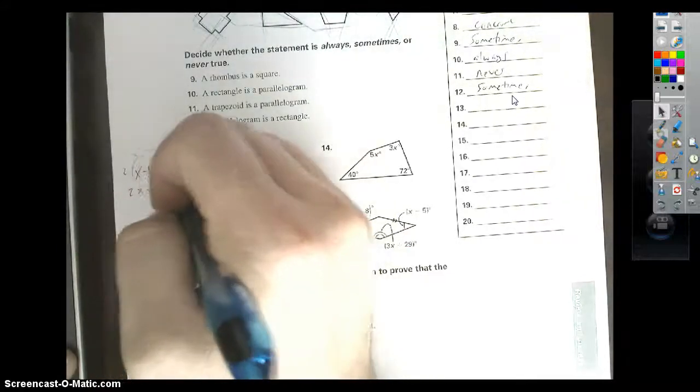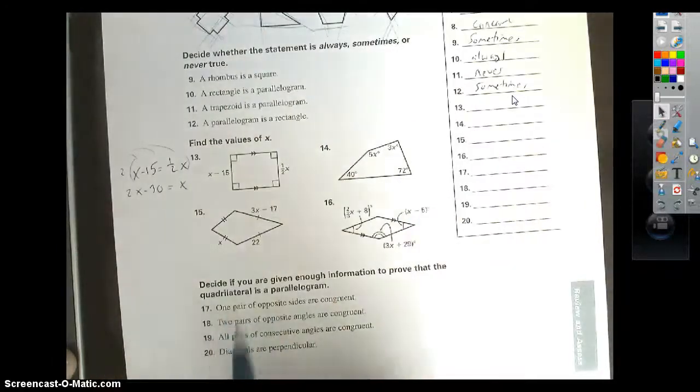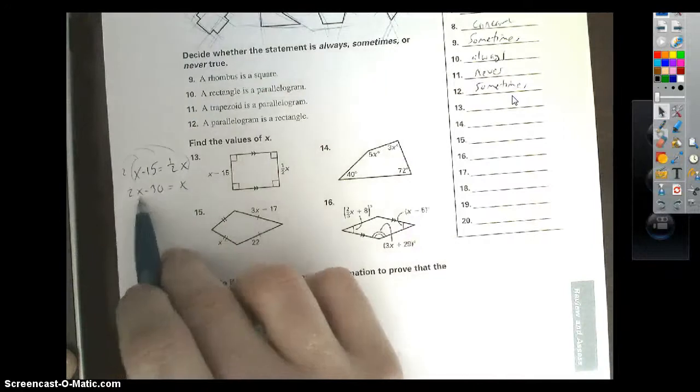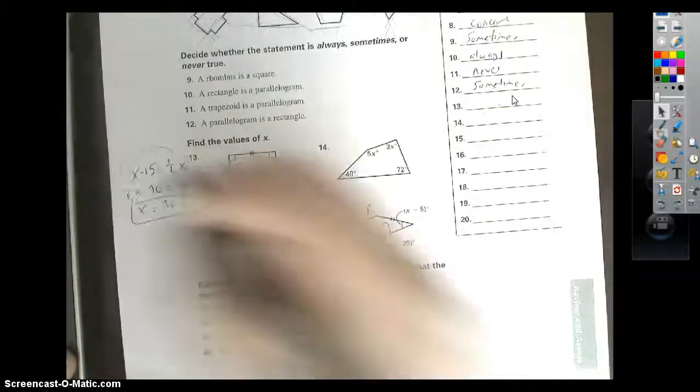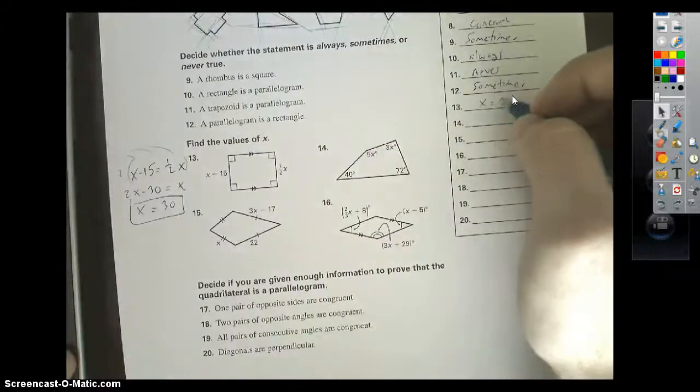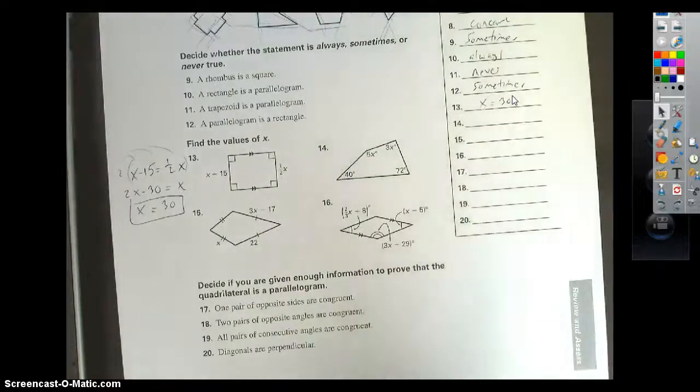2x minus 30 equals x. The 2 times 1 half cancels out. Subtract x over. Add 30 over. x equals 30. Initial setup is the difficulty there.